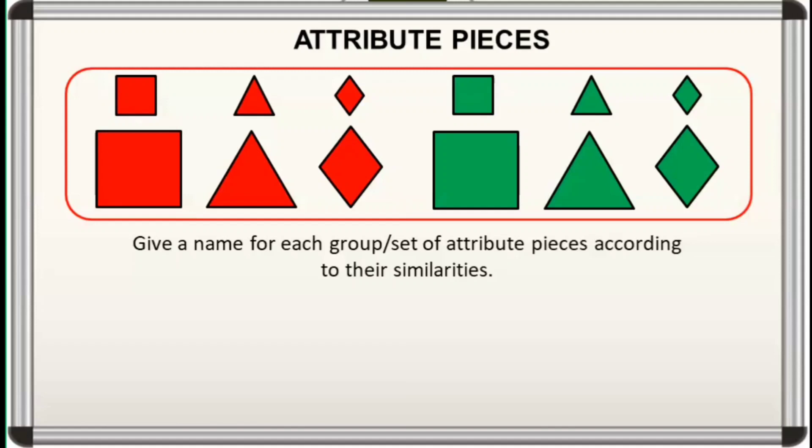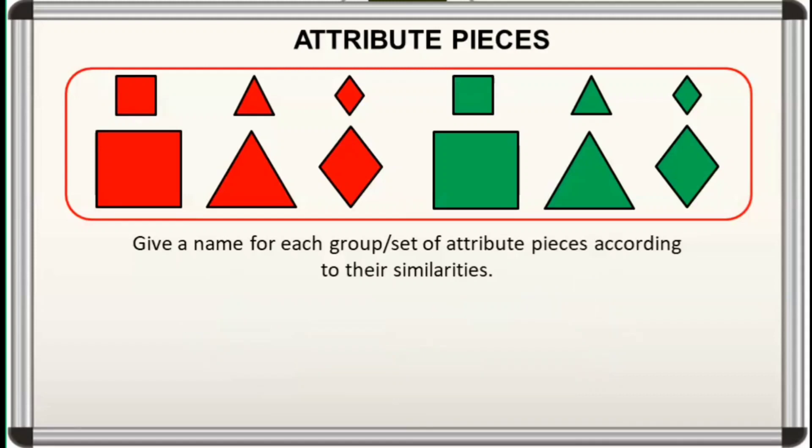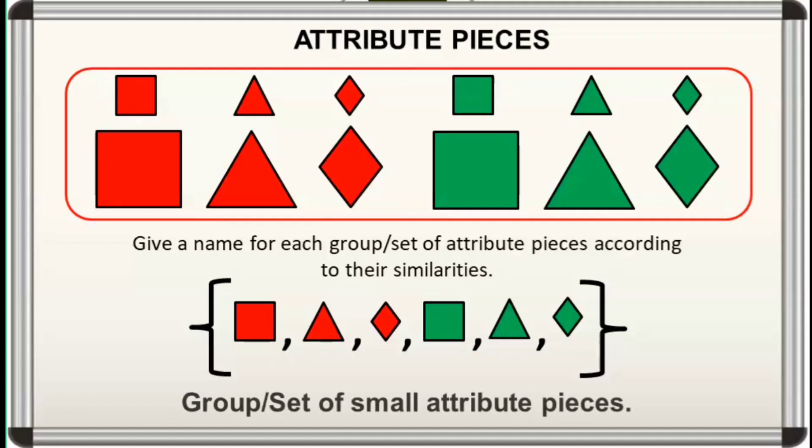Okay? Let's have the first one. Correct! It's a group or set of triangles. Let's proceed to the next. Right! It's a group or set of small attribute pieces.